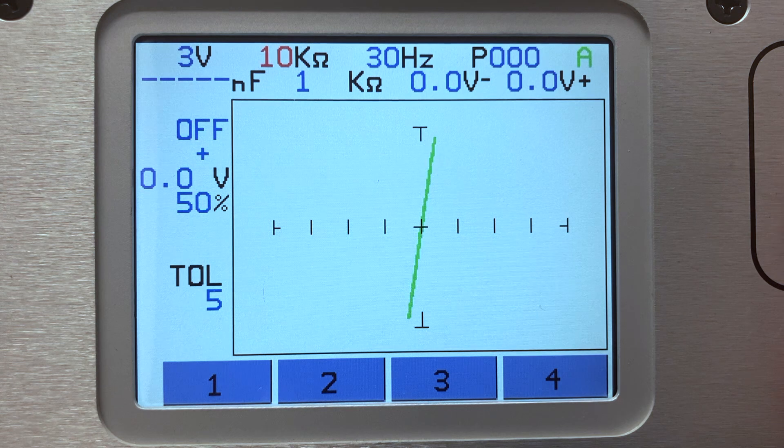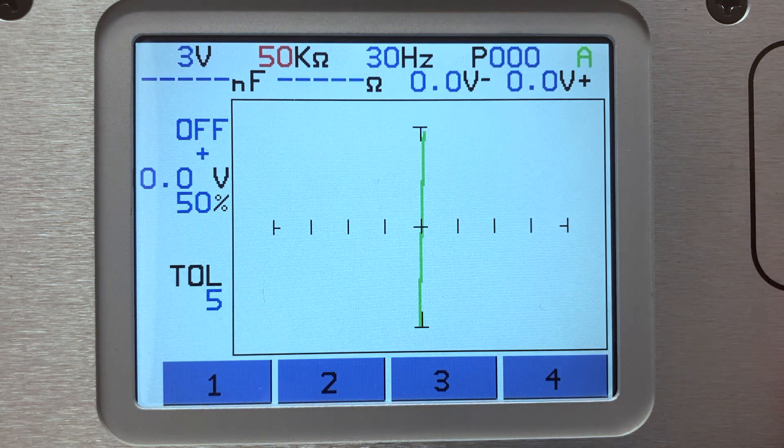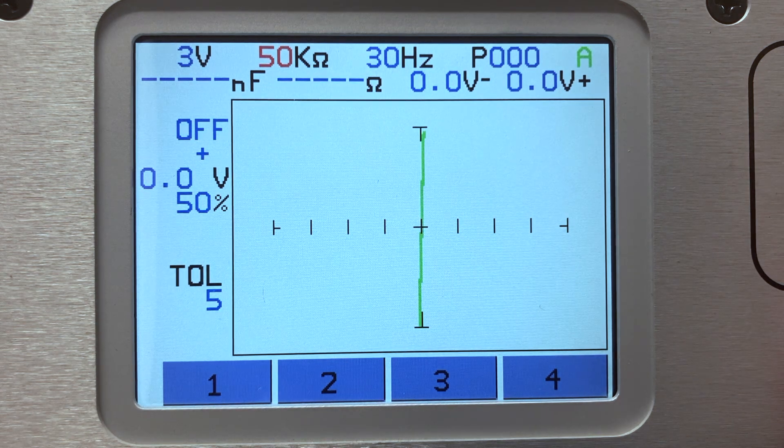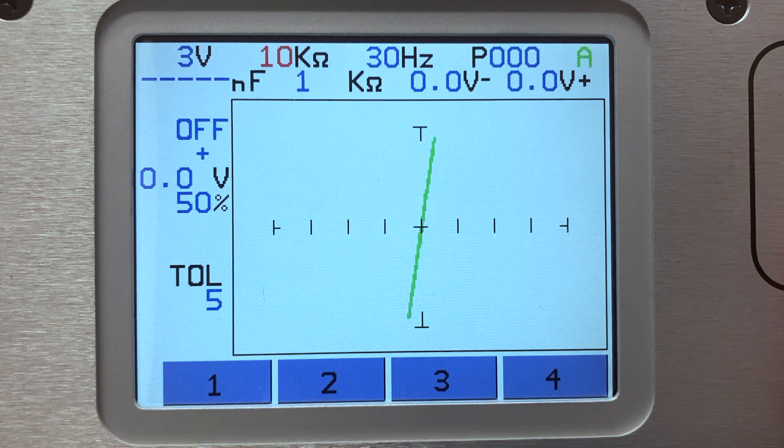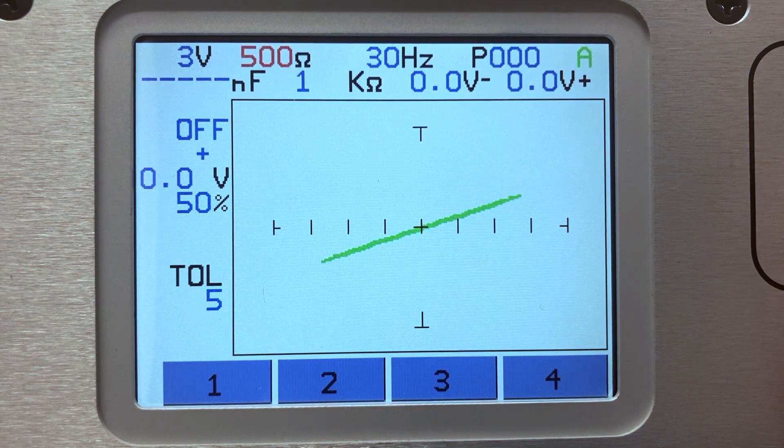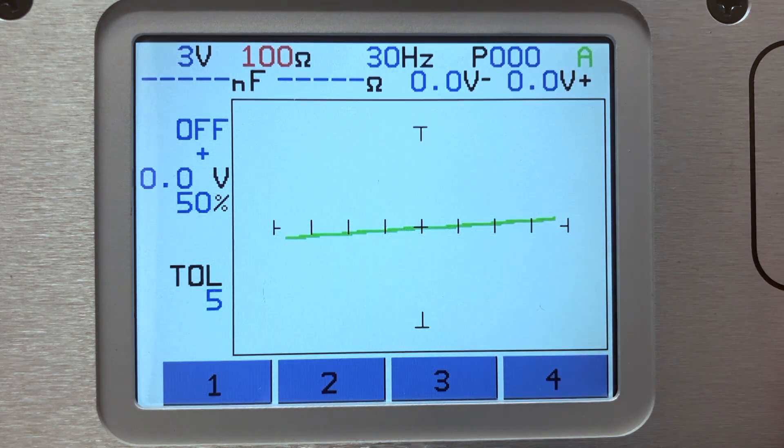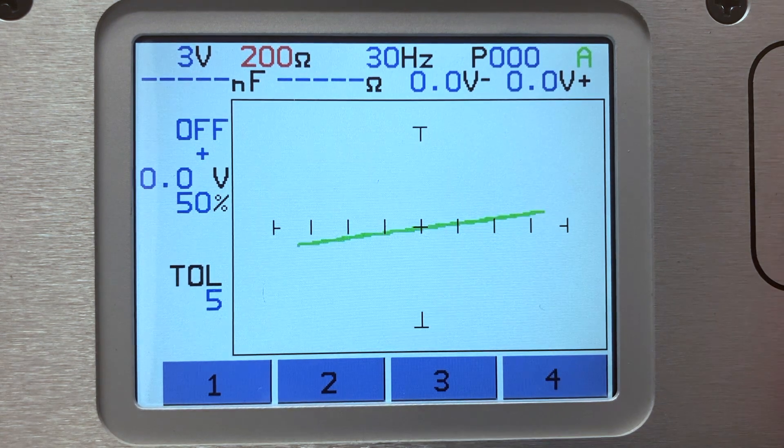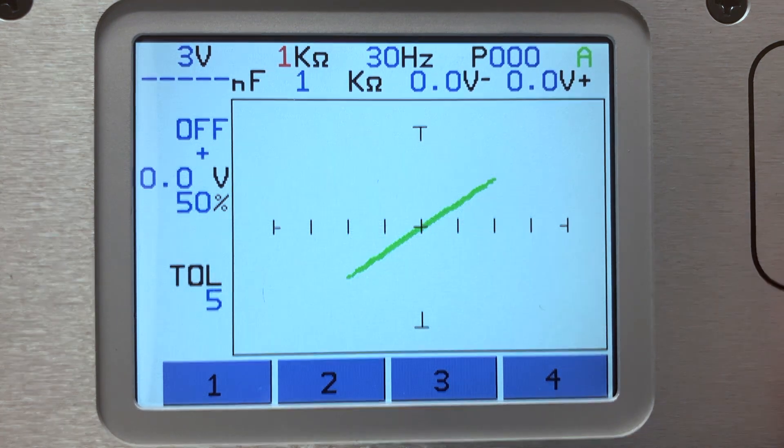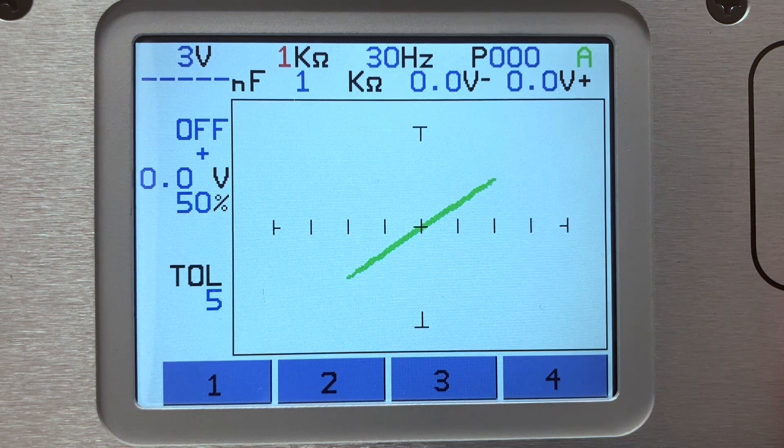Testing the same 1k ohm resistor in the 50k ohm range displays a more vertical signature angle. Changing the range lower to a 100 ohm range displays a more horizontal signature. The idea is to find a range setting that provides an equal amount of horizontal and vertical deflection in the signature.